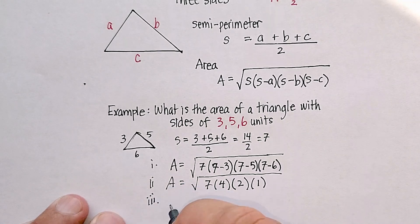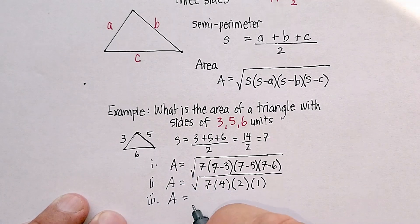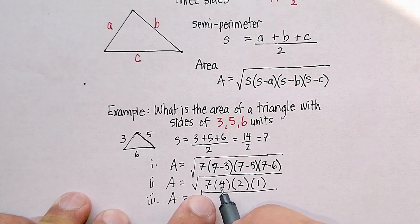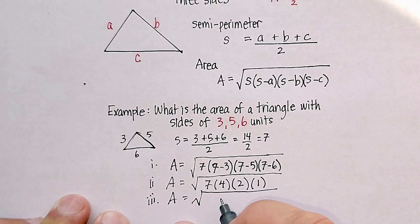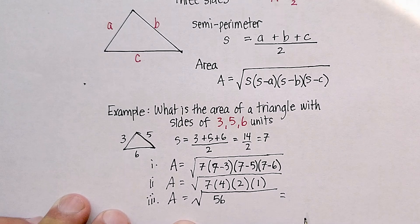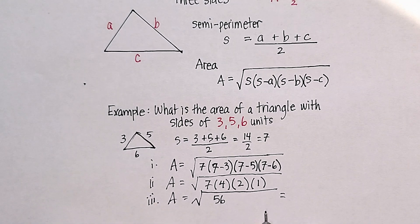Step 3, the area is going to be equal to the square root of... 28 times 2 is 56. 56 times 1 is still 56.